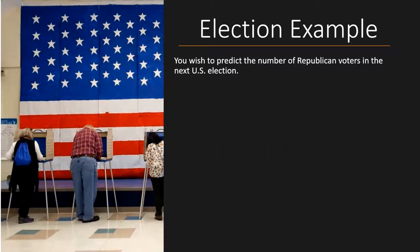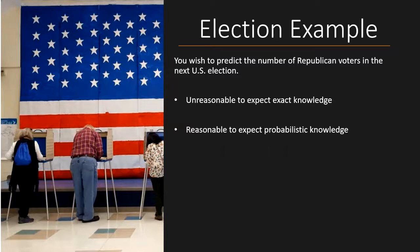Let me give you an example. Consider that you wish to predict the number of Republican voters in the next US election. Then it's certainly unreasonable to expect exact knowledge. Regardless of how much of an expert you are on US politics, there's no way you can predict the exact number of Republican voters. However, it's certainly reasonable to expect probabilistic knowledge. For instance, you can definitely say it's more likely that they get 100 million voters than that they get zero voters.